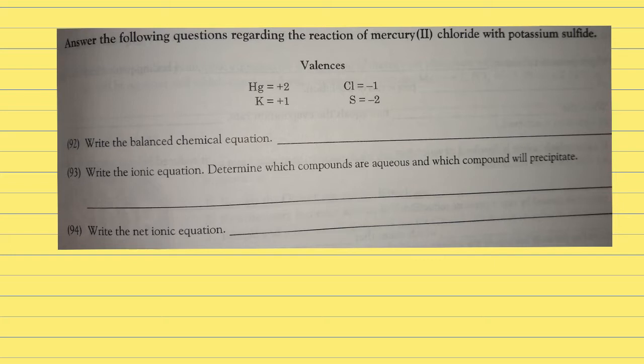Answer the following questions regarding the reaction of mercury(II) chloride with potassium sulfide. Remember, the Roman numeral tells us that mercury has a +2 oxidation number or charge. Chlorine is -1, and potassium sulfide has potassium K and sulfur S, sulfide is -2.